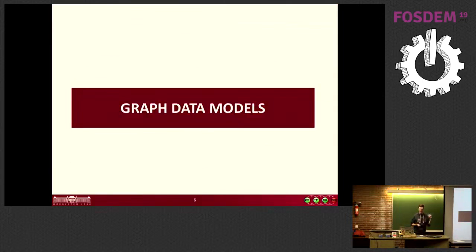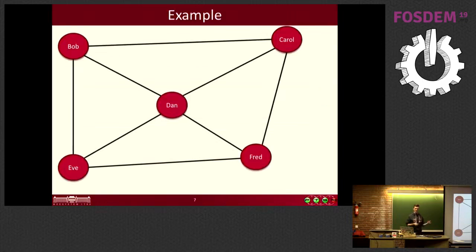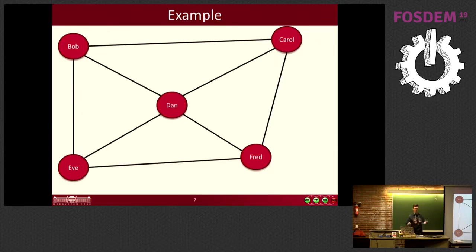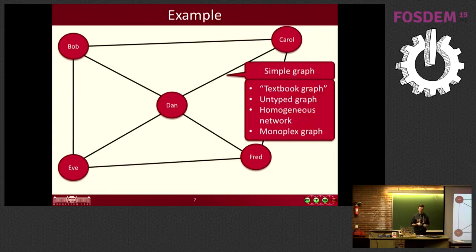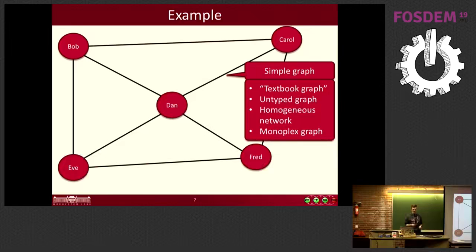When we talk about graph data models, it's important to get the terminology right. A textbook graph shows a social graph with nodes as persons and edges as relationships. This is called a single graph, untyped graph, homogeneous network, or monoplex graph — these are all the same term.